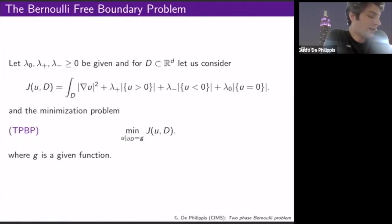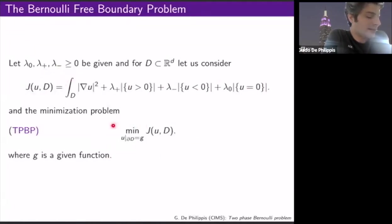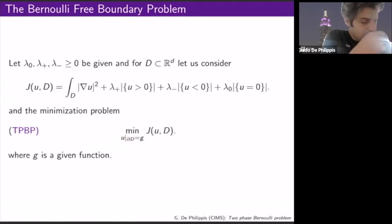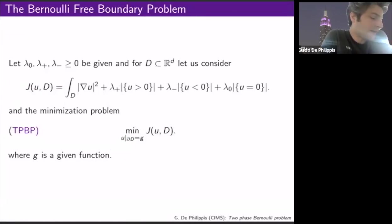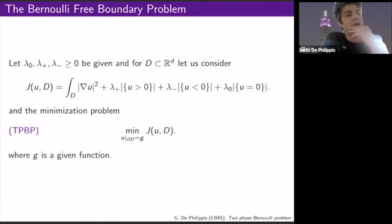The penalization is according to these three constants, and then you minimize the functional among all functions with some given boundary data. This looks like a pretty natural functional, and this is what is usually called the Bernoulli two-phase problem.